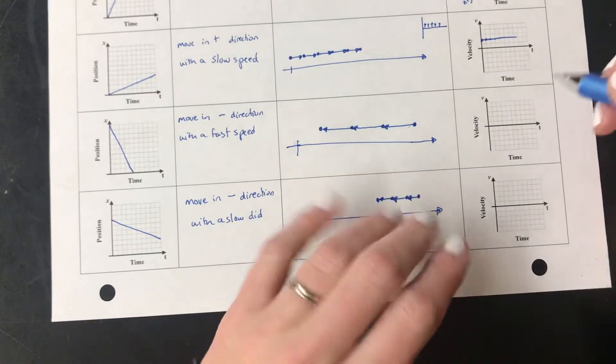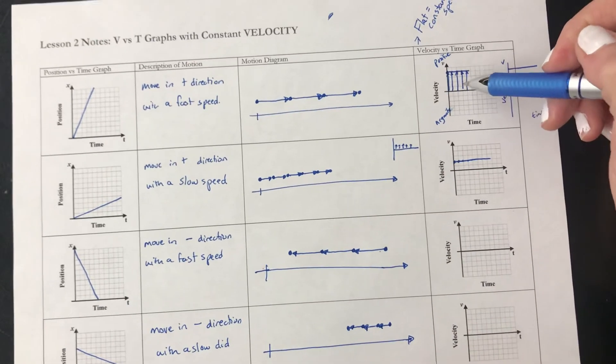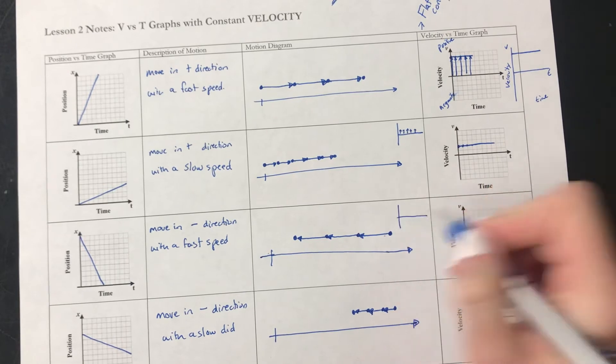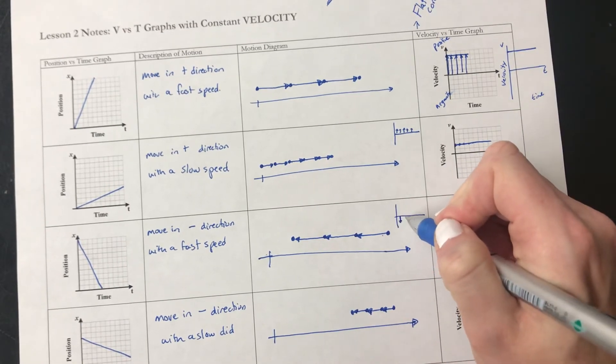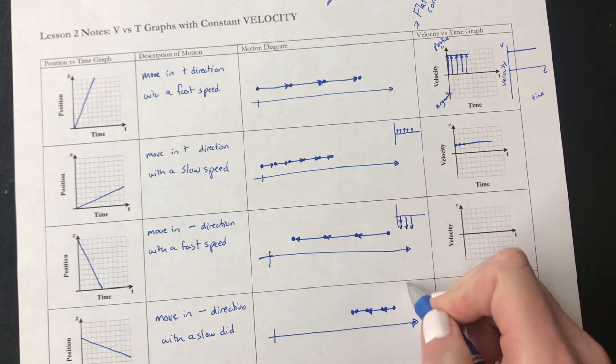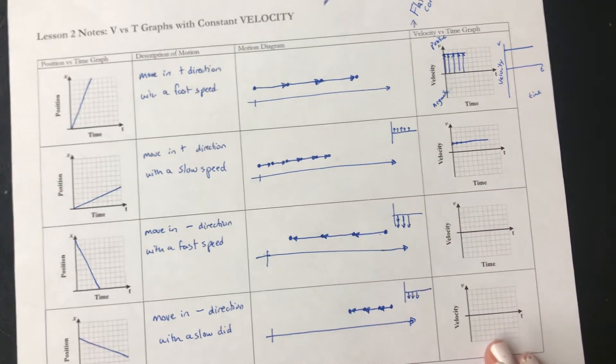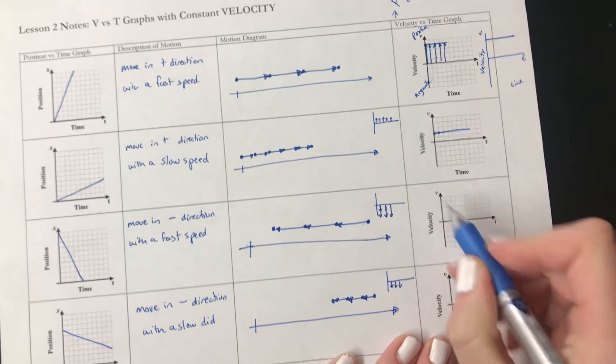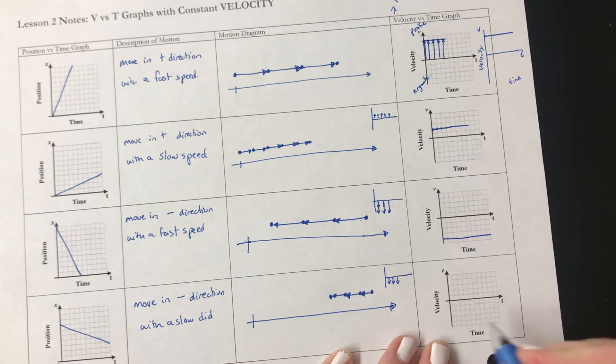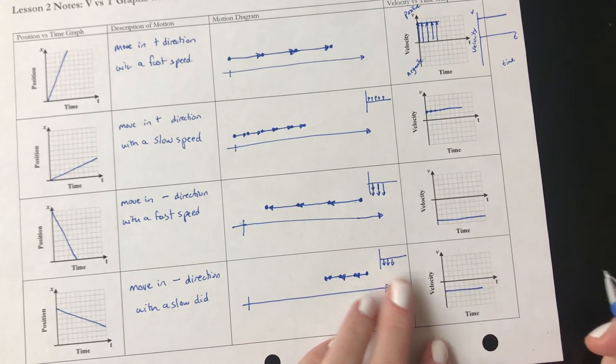So this time what do I do with my arrows? So up here my arrows are pointing up and I'm lining them up next to each other. When it's going in the negative direction I have to point them down. Oops, let's make these longer because it's faster. Here I'm going to be pointing them down. So when I put my line it's going to be below the axis and it'll be closer to the axis when it's slower.